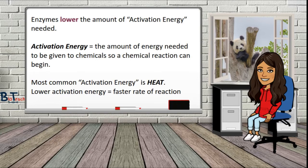Chemical reactions in cells are accompanied by energy changes. Activation energy is the amount of energy needed to raise the energy of the substrate to an unstable transition state before the reaction can go ahead. The amount of energy needed to do this is known as activation energy. Enzymes lower the activation energy by destabilising bonds in the substrate so it's more reactive. The most common source of activation energy is heat. The lower the activation energy, the faster the rate of reaction.